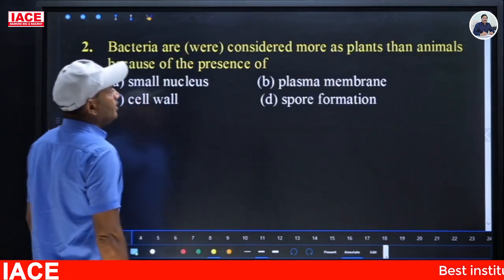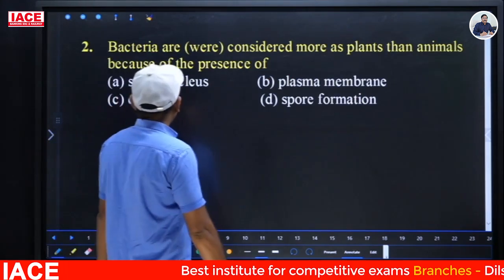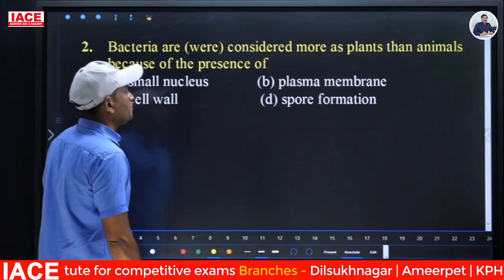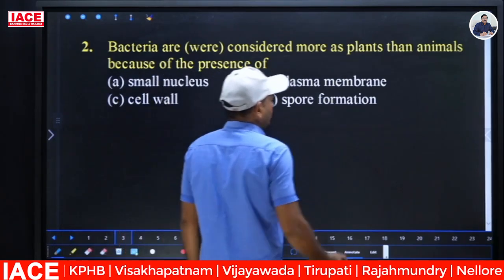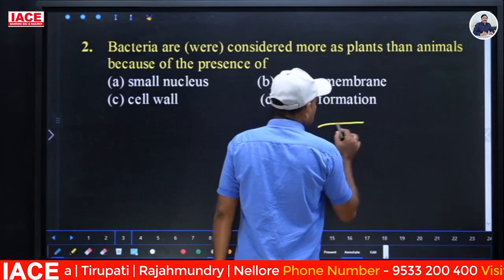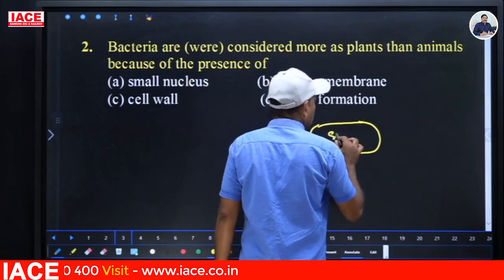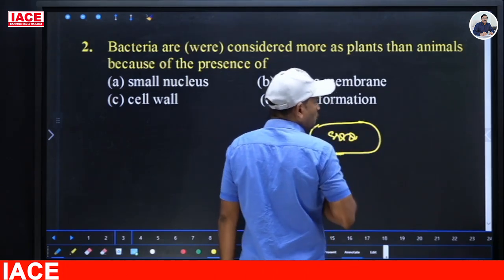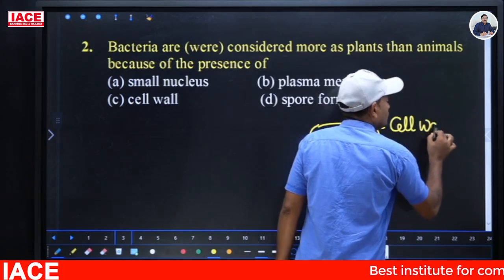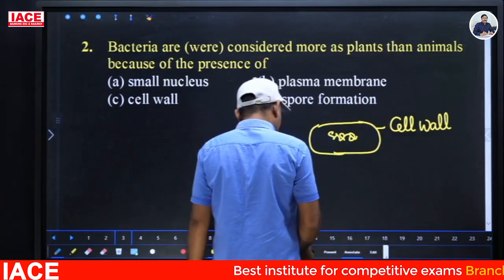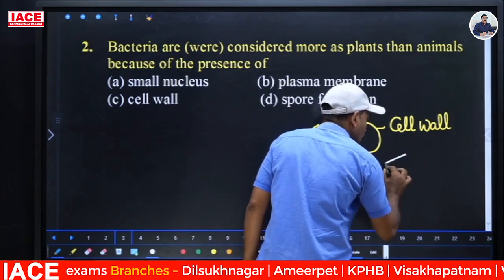Next question: Bacteria are considered more as plants than animals because of the presence of — (A) small nucleus, (B) plasma membrane, (C) cell wall, (D) spore formation. Bacteria is a prokaryotic organism and does not contain the nuclear membrane around the nucleus, but it has a cell wall. Presence of cell wall is the characteristic feature of a plant cell.